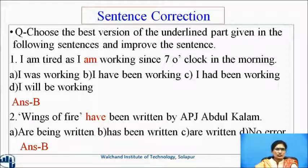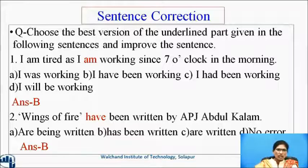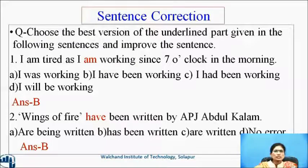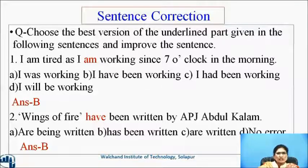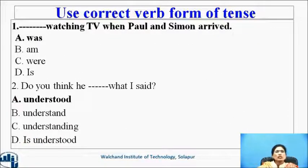Sentence correction. The question will be asked like this: choose the best version of the underlined part to improve the sentence. 'I am tired as I am working since 7 o'clock in the morning.' The correct answer is B — 'I have been working' — because when using 'since' or 'for', we use present perfect or present perfect continuous tense. Second example: 'Wings of Fire have been written by APJ Abdul Kalam' — the correct option is 'has been written', since the title is singular. Corrected: 'Wings of Fire has been written by Dr. APJ Abdul Kalam.'